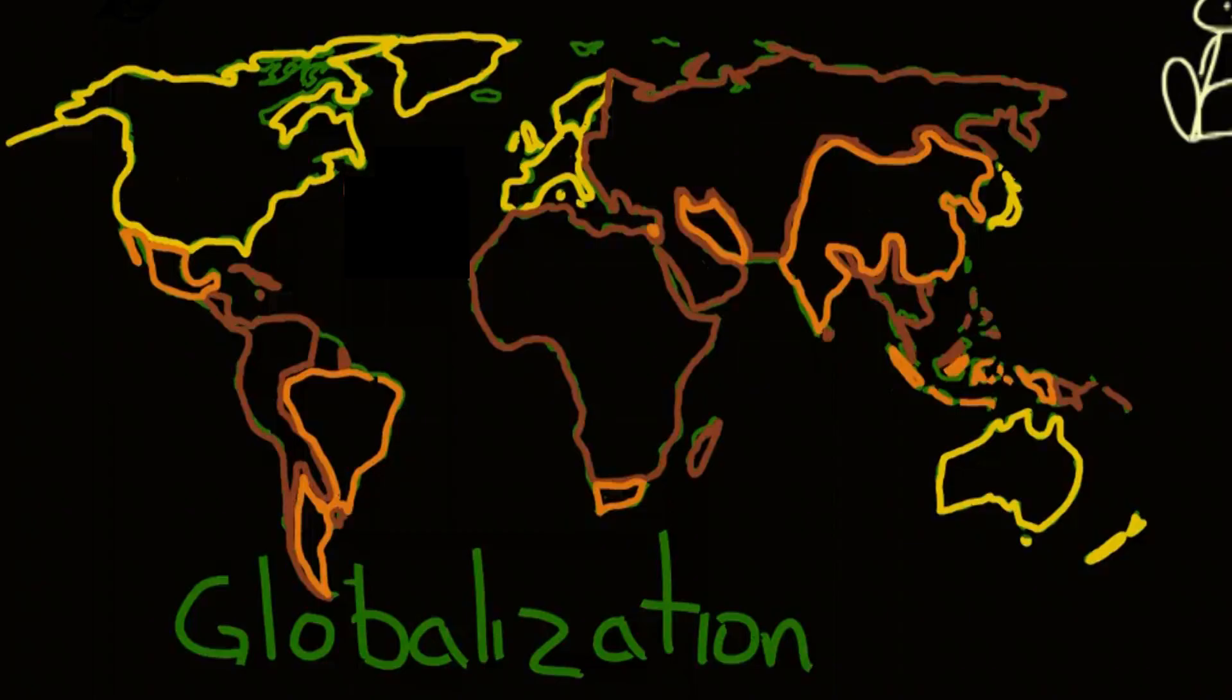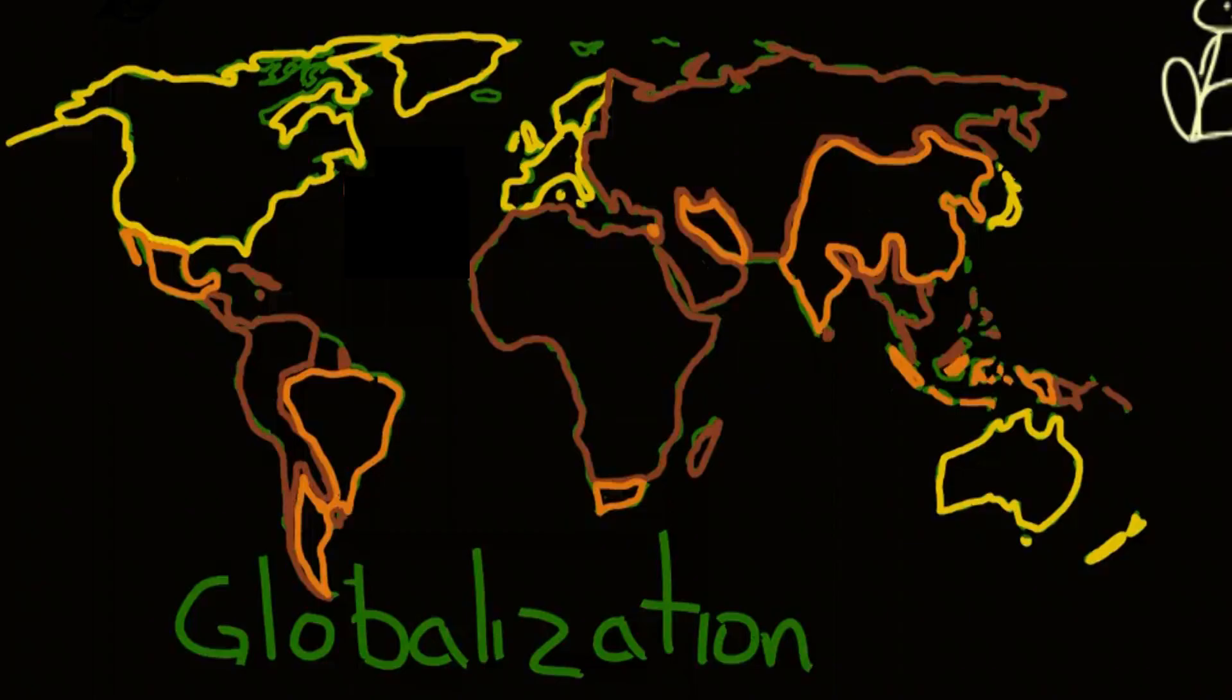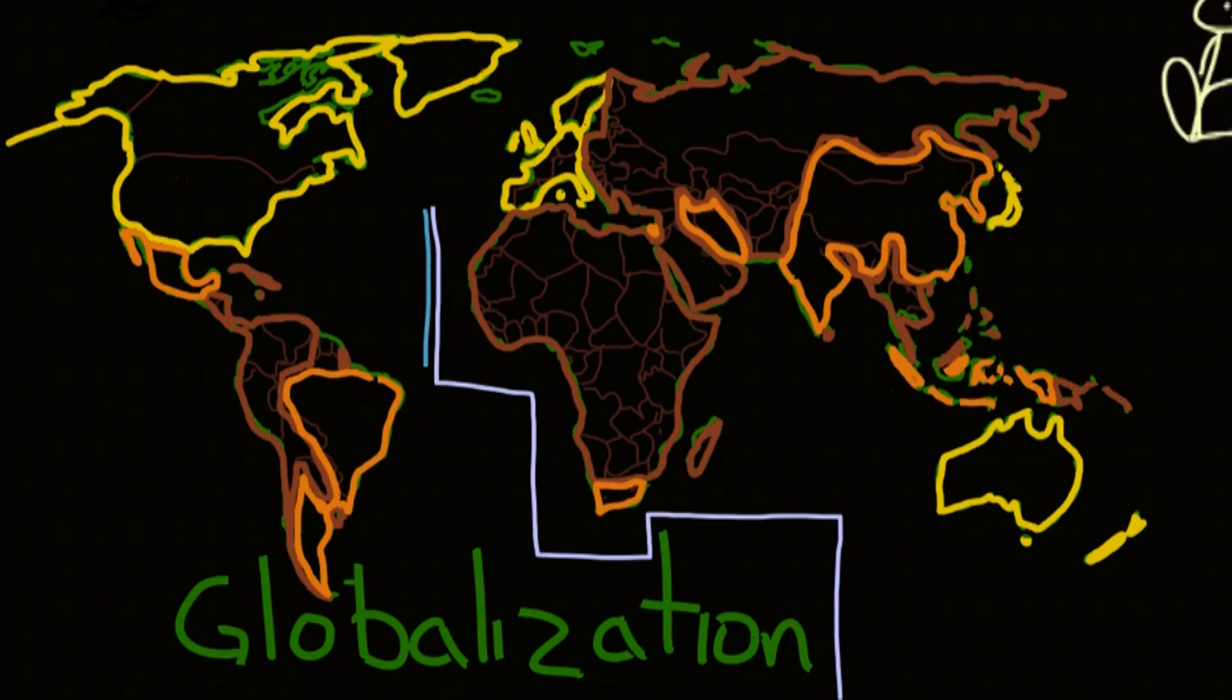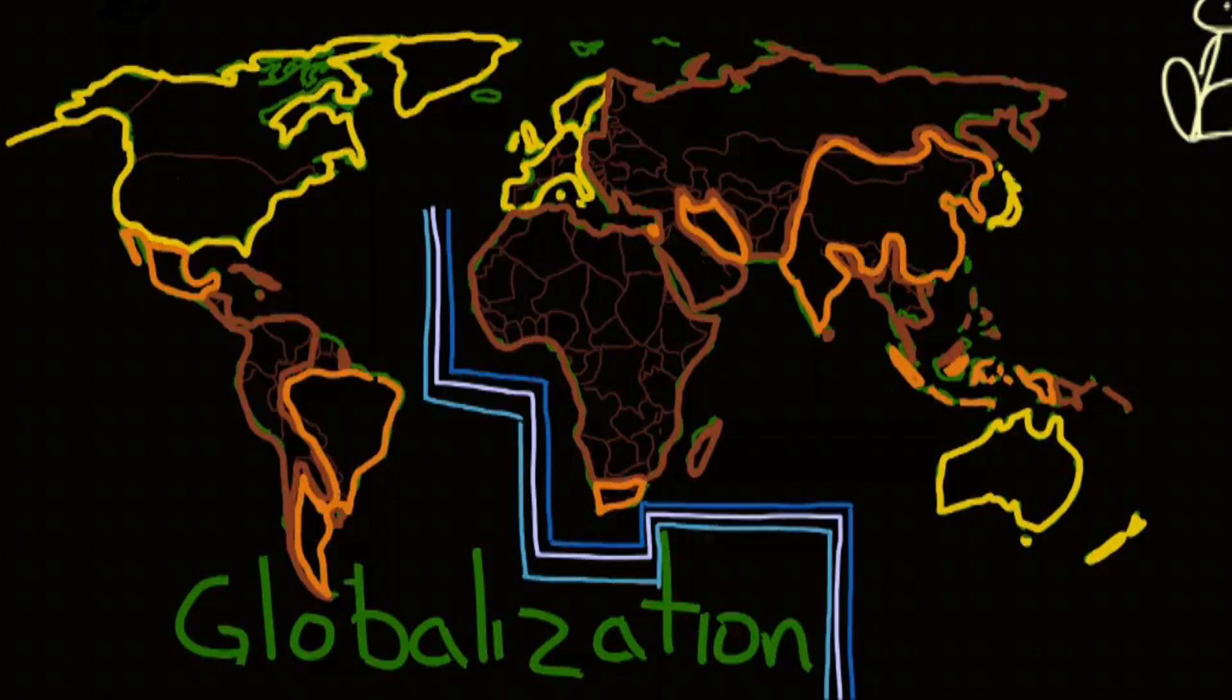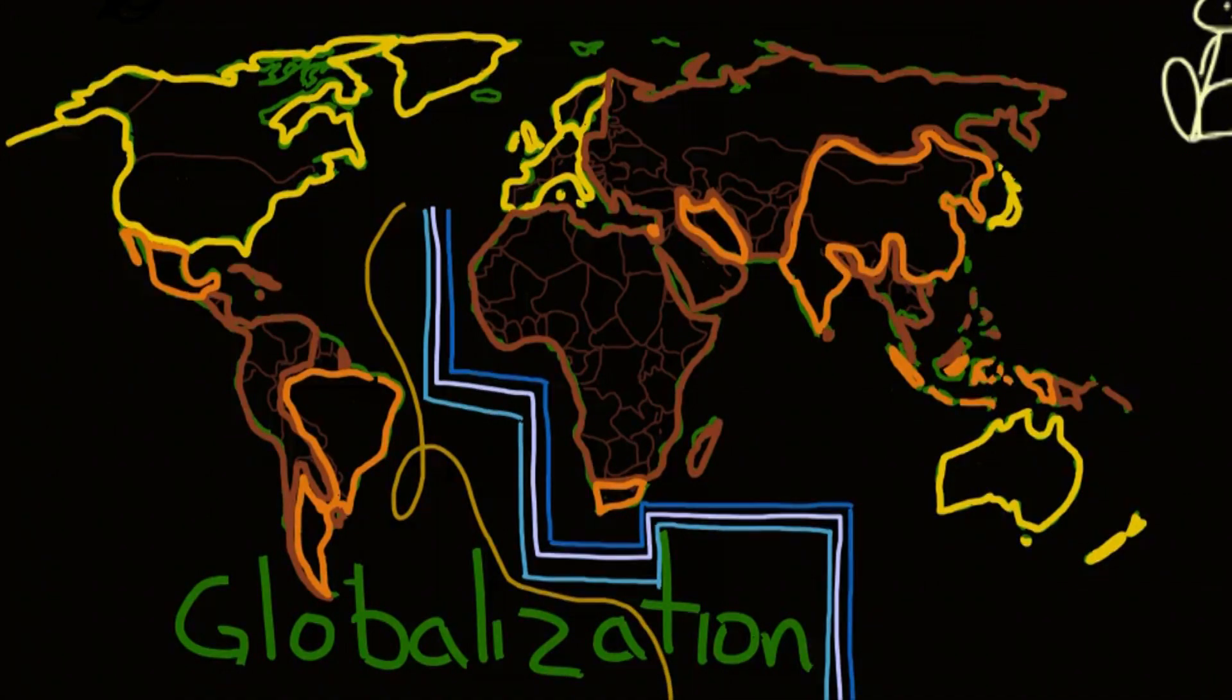Then you have modernization theory, which states that every country follows a similar path of development, from traditional to modern, and that today's third world countries can reach the same state of development as today's first world countries with help over time. Dependency theory, which is a reaction to modernization theory, states that the third world countries have their own unique structures and are poor and will remain so because of their unfavorable economic position in the world economy. Other theories look at culture or social networking or economy or politics or goods.